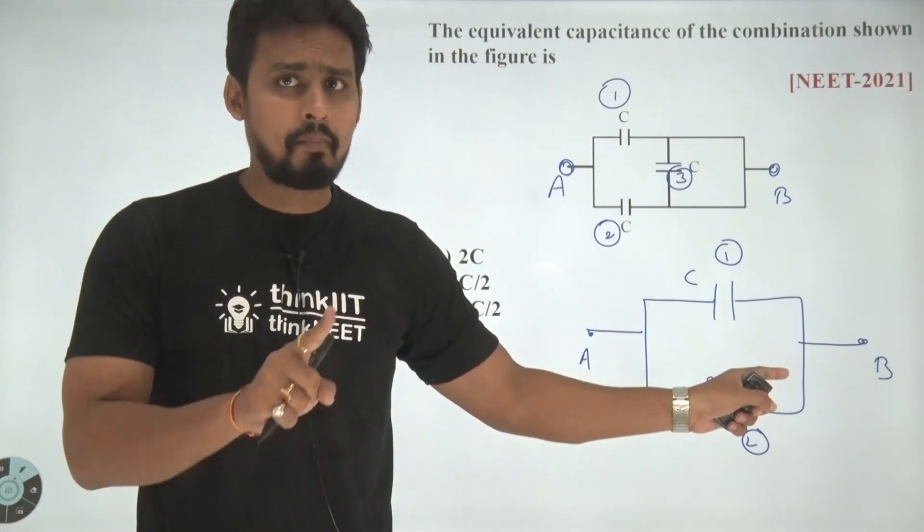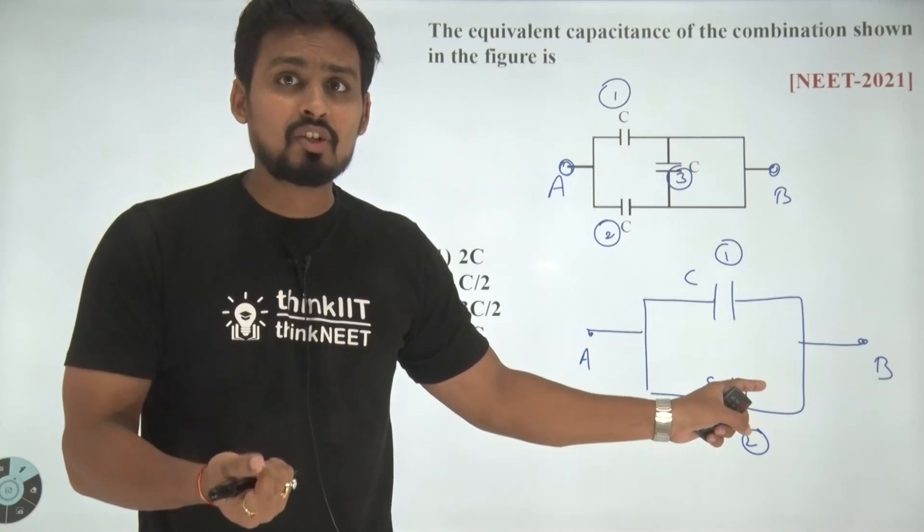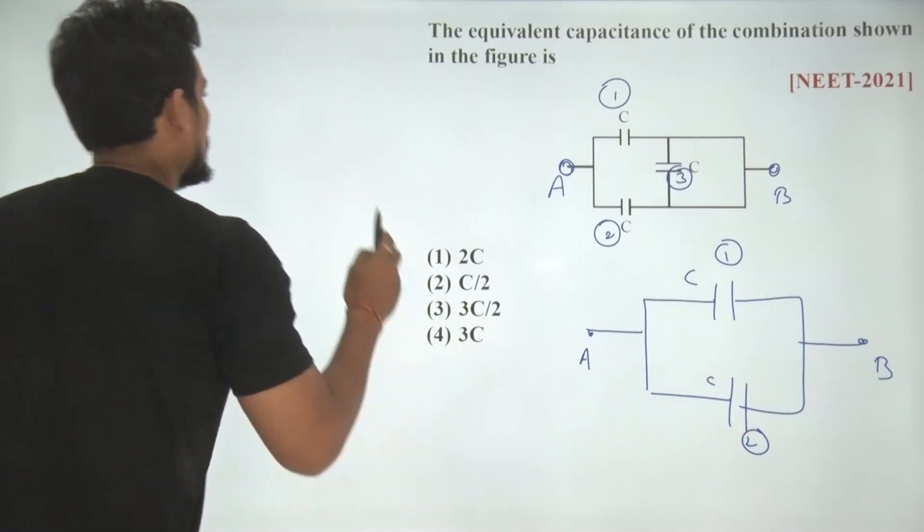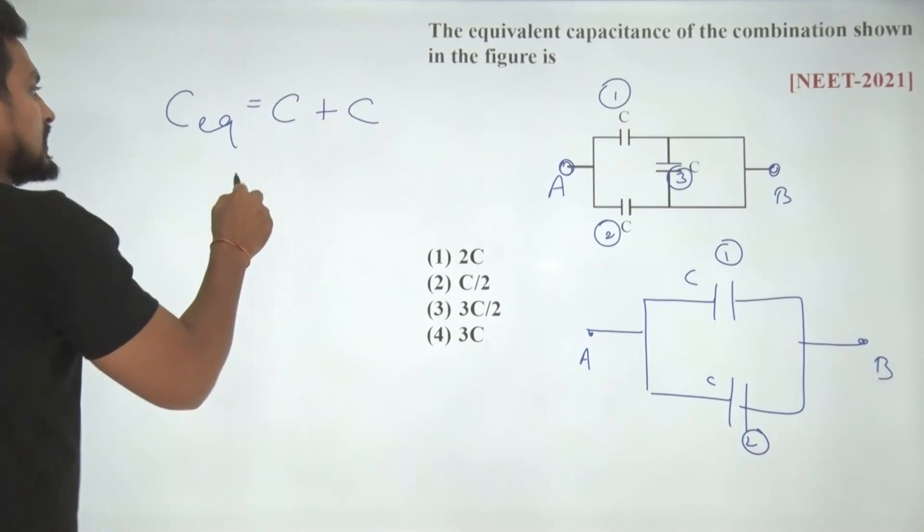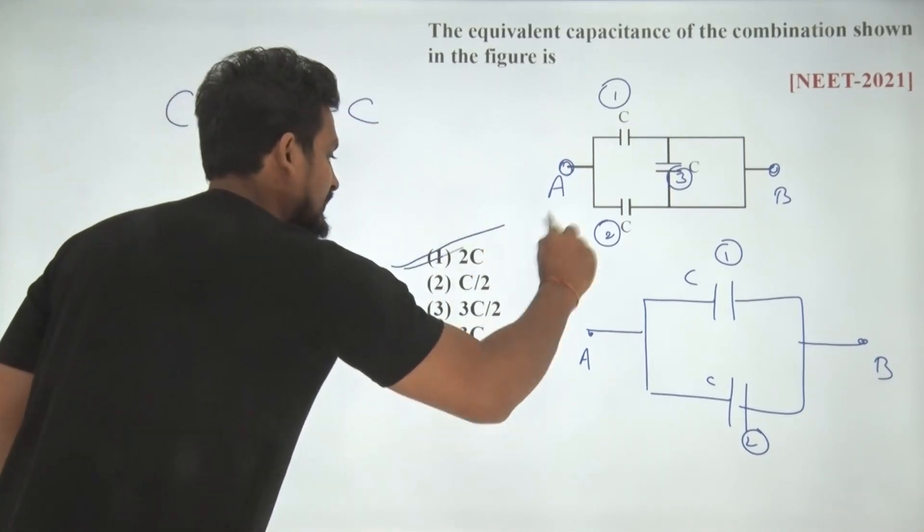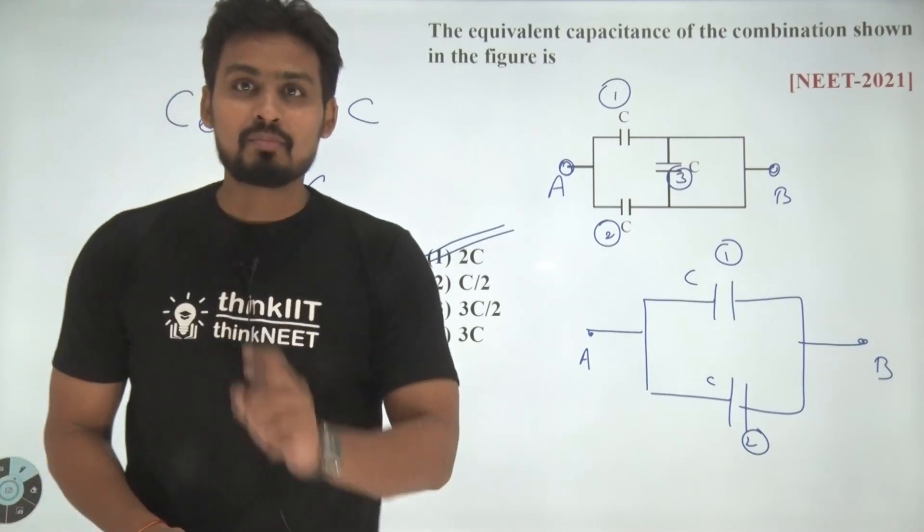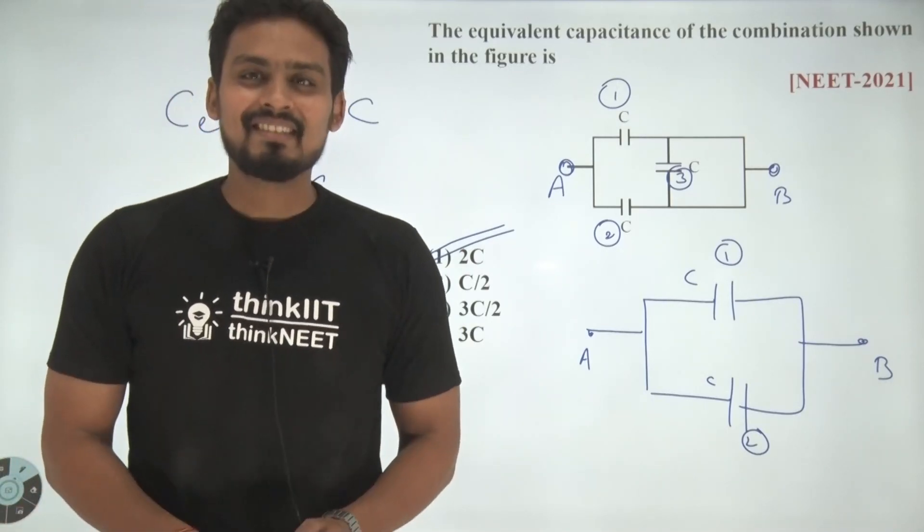This is having capacitance C and this is having capacitance C. These capacitors are connected in parallel and hence C equivalent would be equal to C plus C which is equal to 2C. Hence the correct answer for this particular question becomes option 1. I hope you have understood this. Thank you.